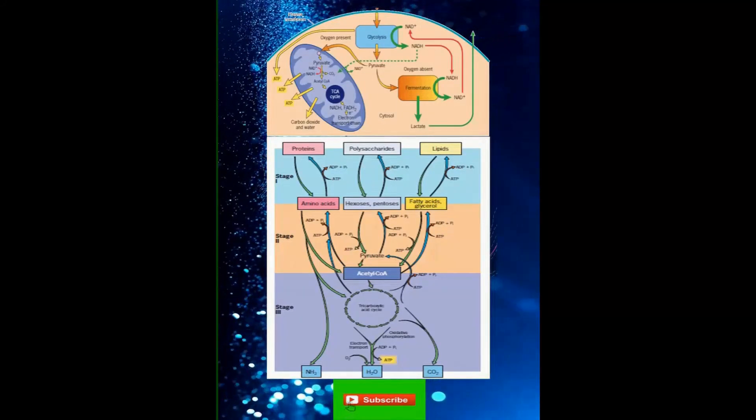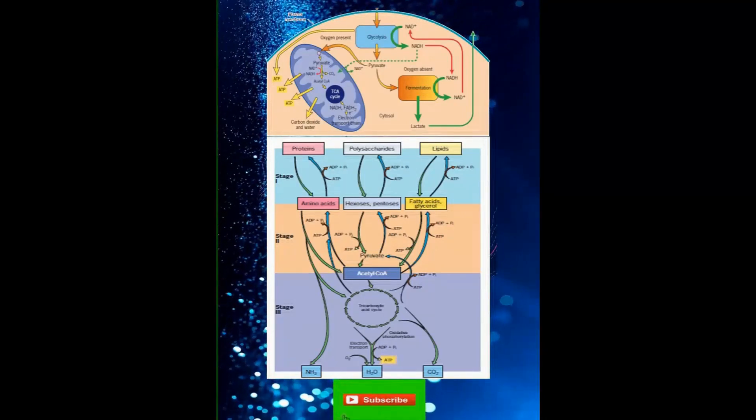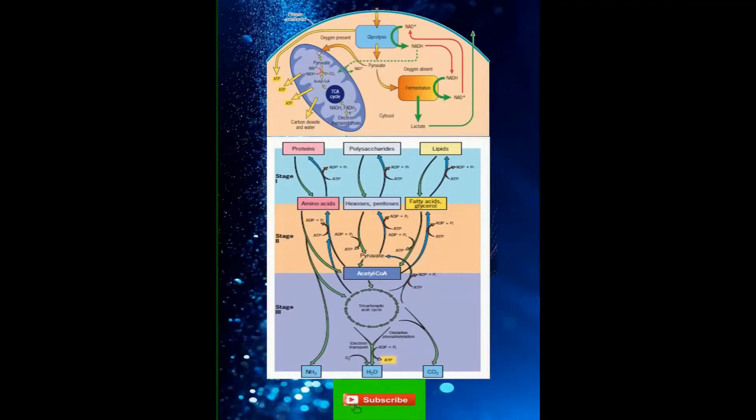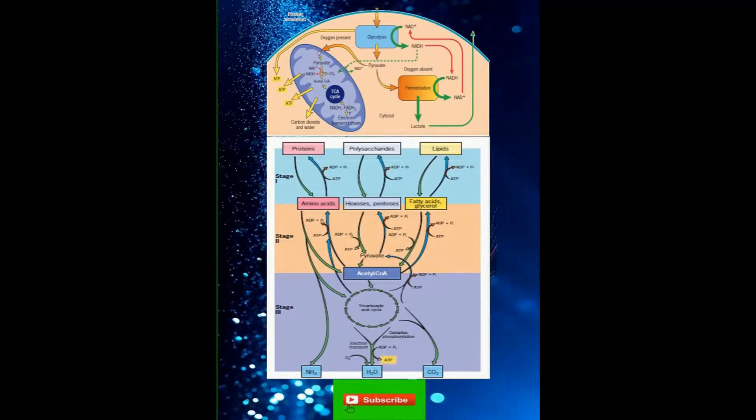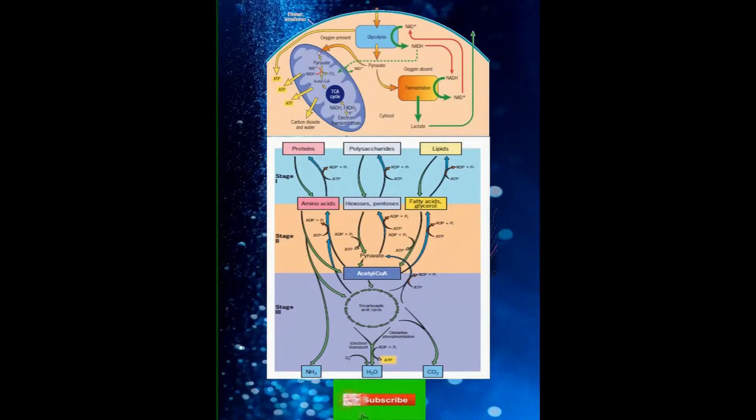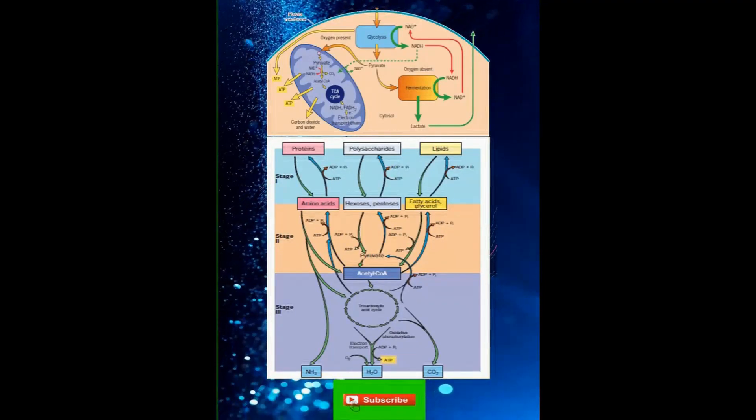We described the initial stages in the oxidation of carbohydrates in our last video. Beginning with glucose, the first steps of oxidation process are carried out by the enzymes of glycolysis which are present in cytosol.